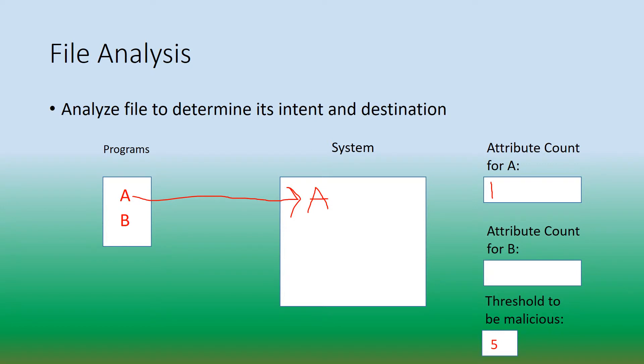We're keeping track of the number of attributes that each program has, and the more attributes that a program has, the more likely it is to be malicious. So after further review of A, the system determines that it also reformats hard drives. The system flags this as another bad attribute, so we increment the attribute count for A.